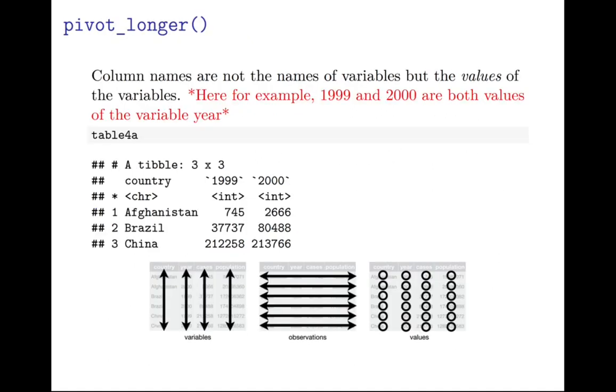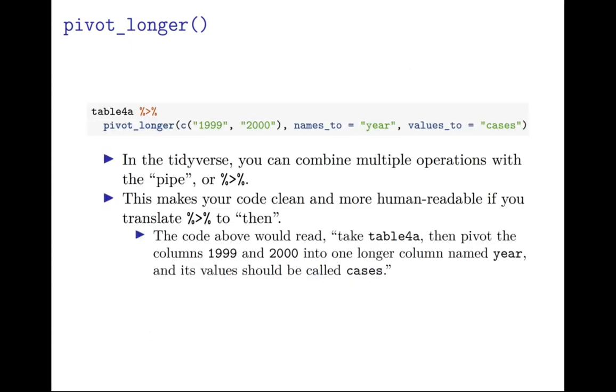So let's go over pivot_longer first. Here the column names are not the names of the variable but the values of the variable. What that means is, looking at this table, table 4a, you can see that 1999 and 2000 are both values of the variable year. So the column names 1999 and 2000 really should be in a row itself named year. For pivot_longer, here's the code you're going to use, but let's first go over some of what these symbols mean. In the tidyverse you can combine multiple operations with the pipe, or this percent sign, greater than, percent sign.